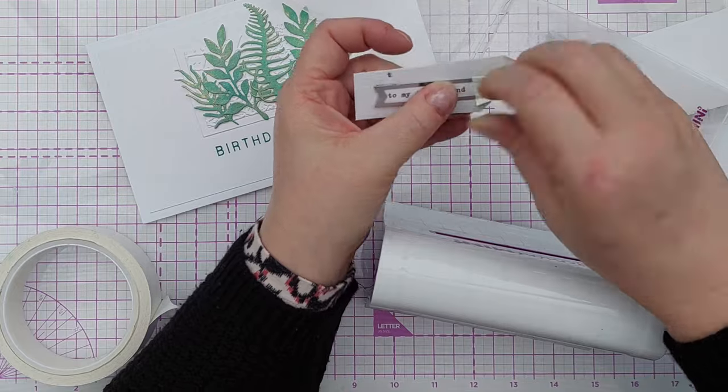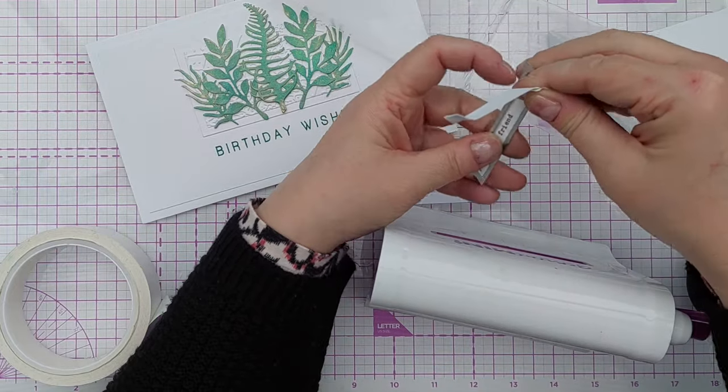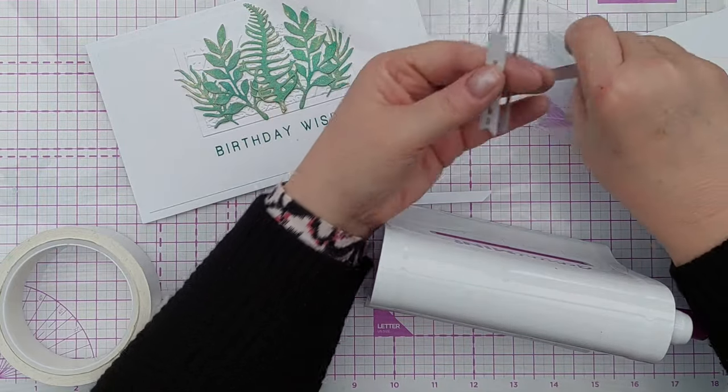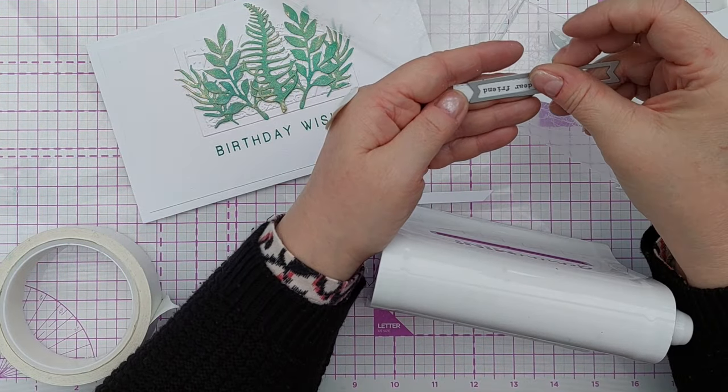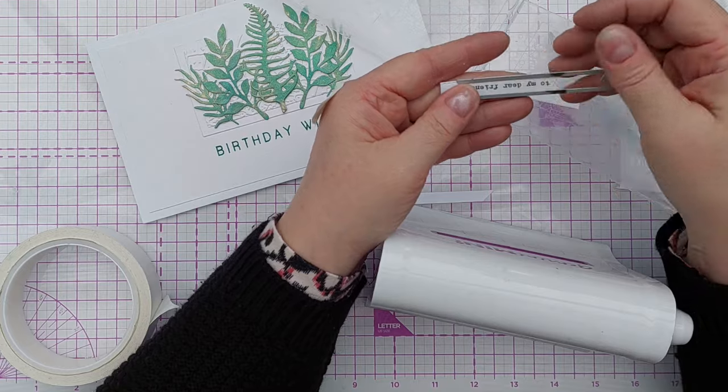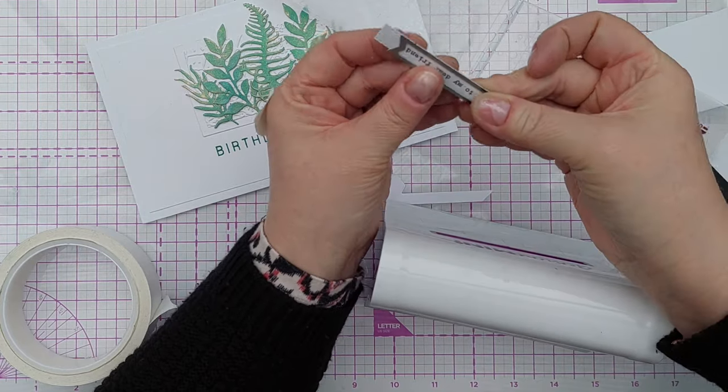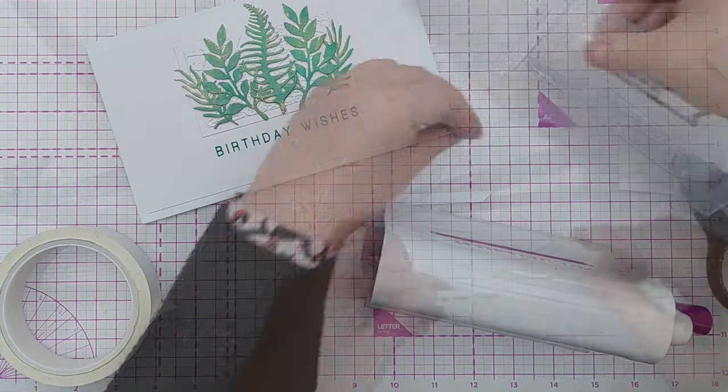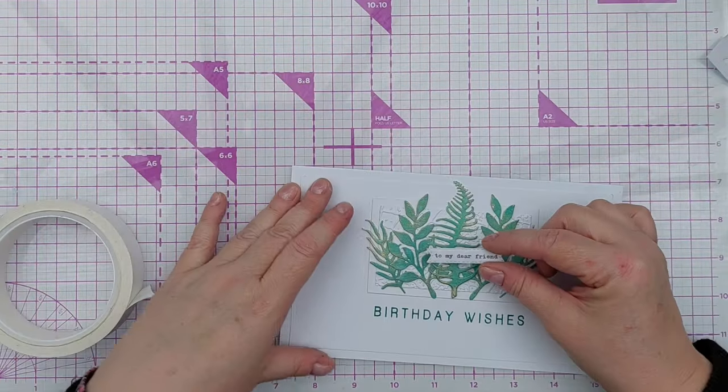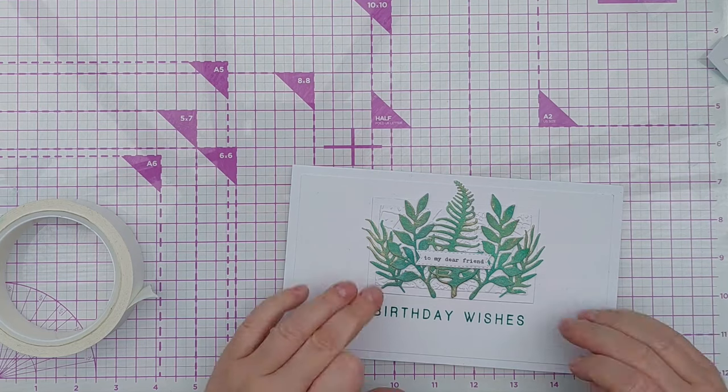And run that through. I'm going to take the die, line it up with the other end, lock the stitches so that it is in exactly the right place. Then we have a little banner perfectly sized and that's going to sit on there.